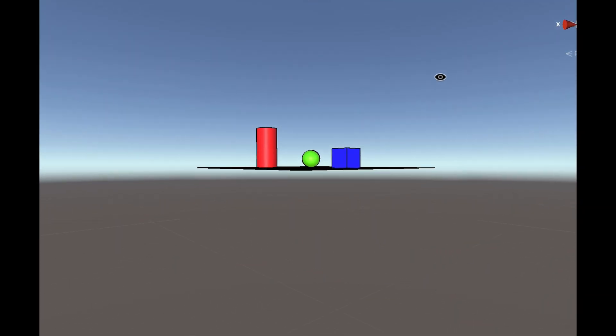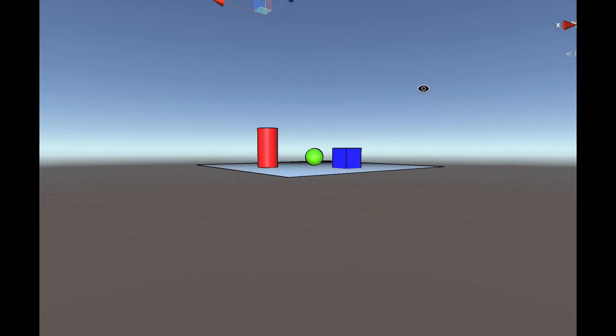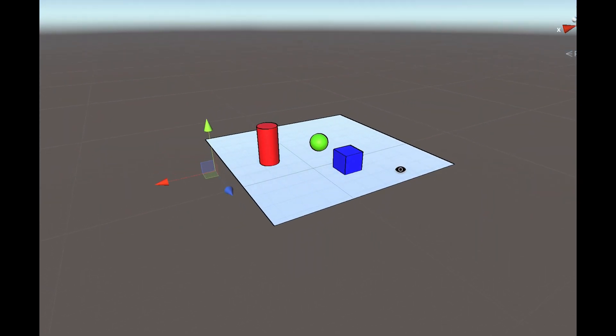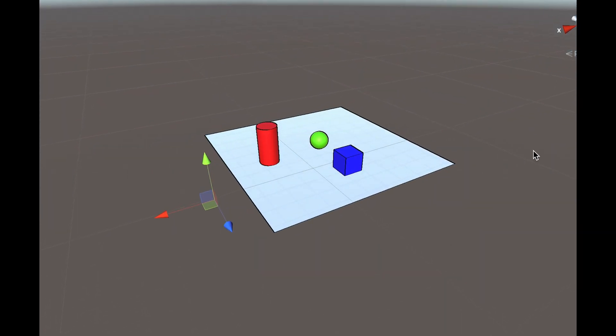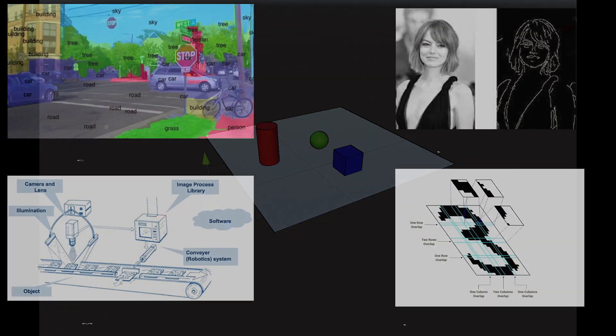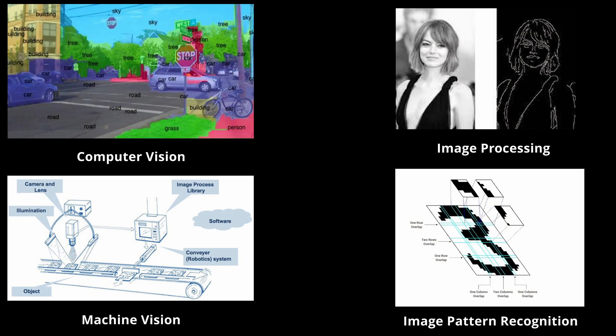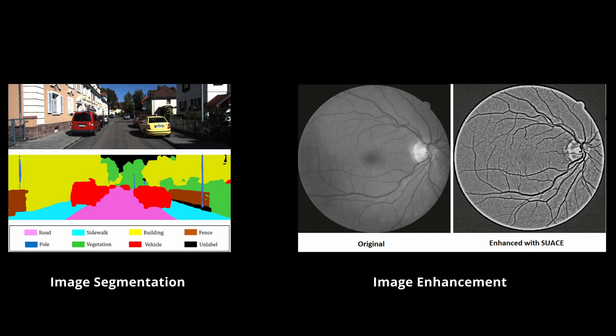There are at least four or five different uses of this filter. For instance, computer vision, image processing, obviously computer graphics, machine vision, and also image pattern recognition. This filter is used for image segmentation, image enhancement, and data extraction from a starting image or texture.